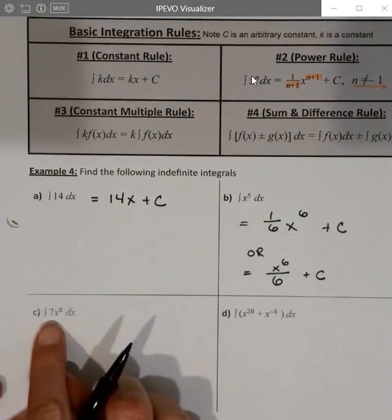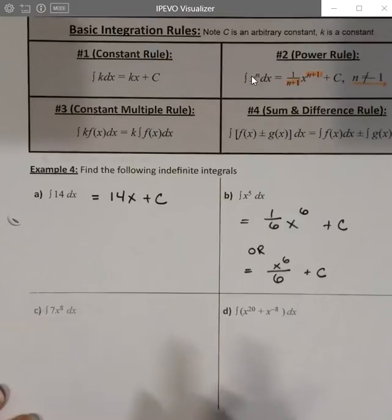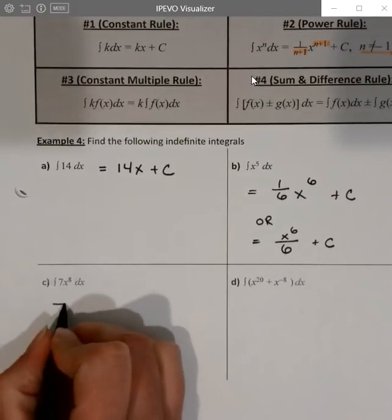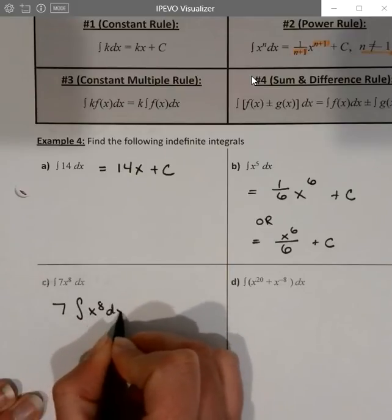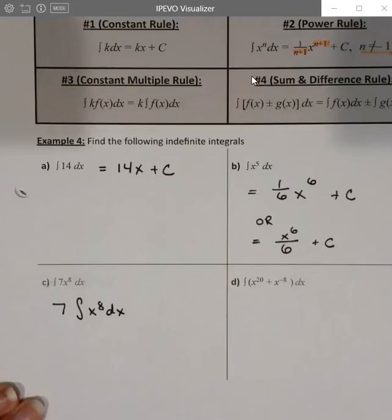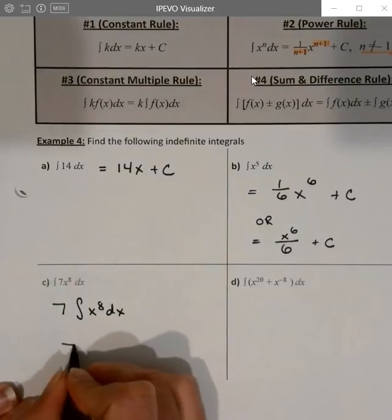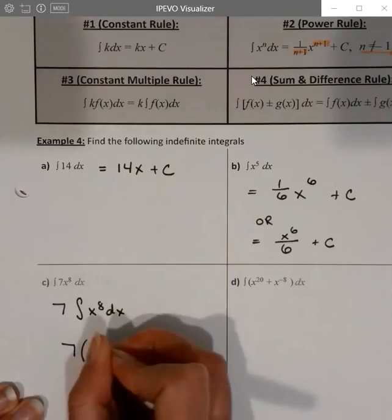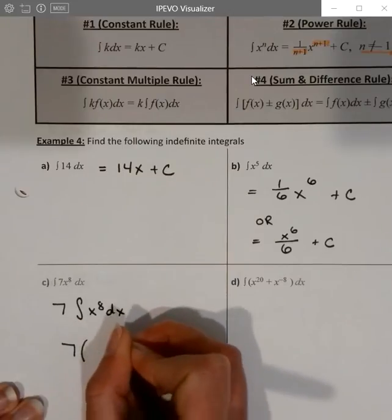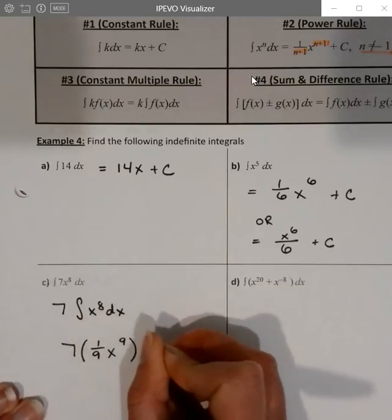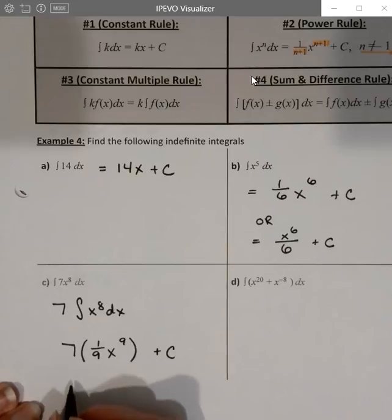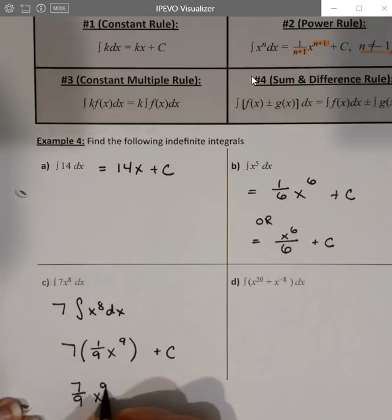And c is going to be a combination of the constant multiple rule and the power rule. So we'll think about that seven as being outside of the integral. So seven times the integral of x to the eighth dx. And then we'll leave the seven alone. Need a little bit of space for that power rule. And then I have my x to the eighth plus one is nine. And then times the one ninth plus c. And then I'm going to put those back together as seven ninths x to the ninth.